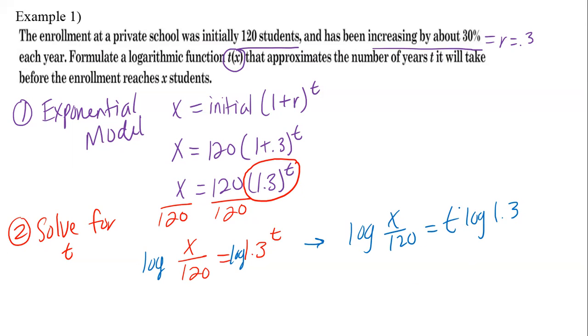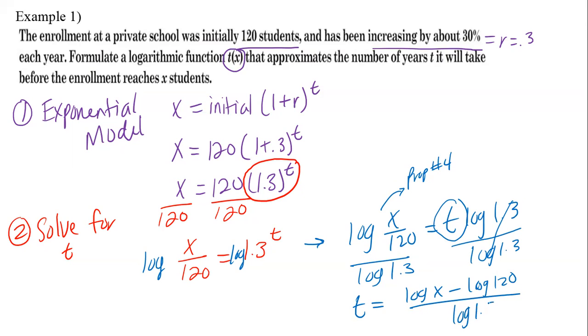And what would be the last thing to get t by itself? Divide by log 1.3. Okay, so it's kind of frowned upon to have a fraction within a fraction. I can expand using property number four. So we have t equals log of x minus log of 120 divided by log 1.3.